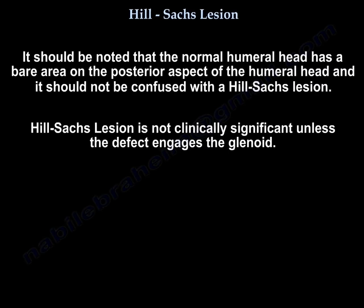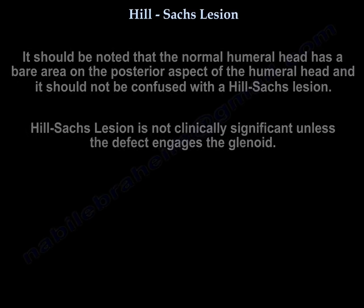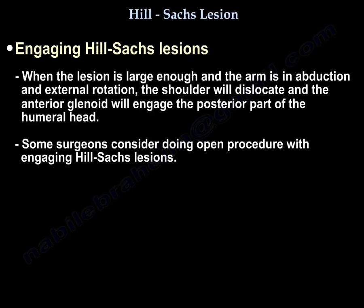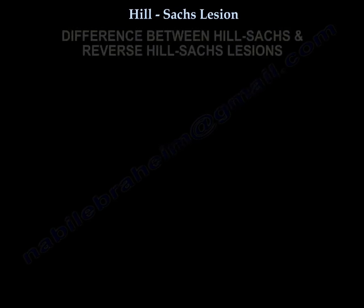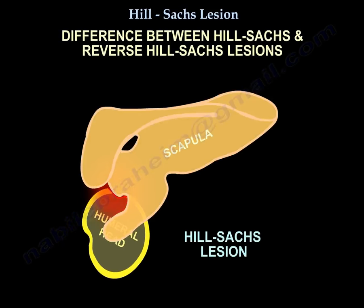A Hill-Sachs lesion is not clinically significant unless the defect engages the glenoid. When the lesion is large enough and the arm is in abduction and external rotation, the shoulder will dislocate and the anterior glenoid will engage the posterior part of the head. Some surgeons consider doing an open procedure with an engaging Hill-Sachs lesion.